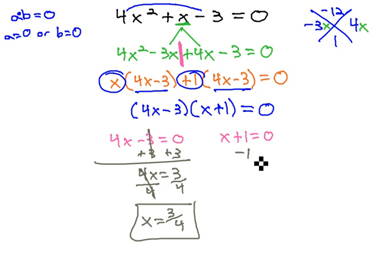Solve the second one by subtracting 1, and we get x equals negative 1. And we have two solutions for this equation.